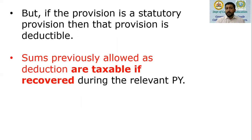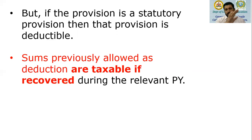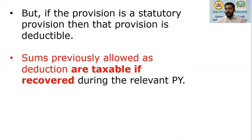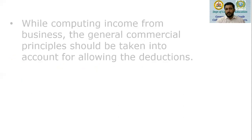Sums previously allowed as deductions are taxable if recovered during the relevant previous year. For example, if bad debts of 10,000 were allowed as a deduction in the previous year — reducing business income and resulting in less tax paid — and the same bad debts are recovered in the current year, then the bad debts recovered will now be taxable during the relevant previous year.